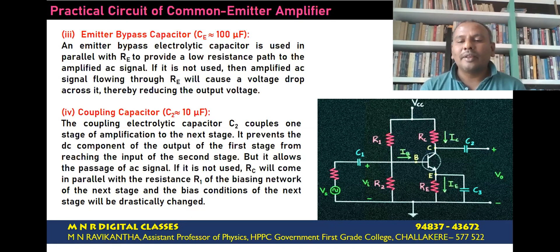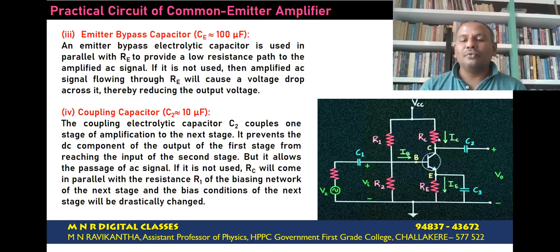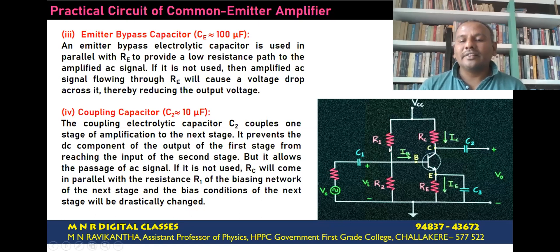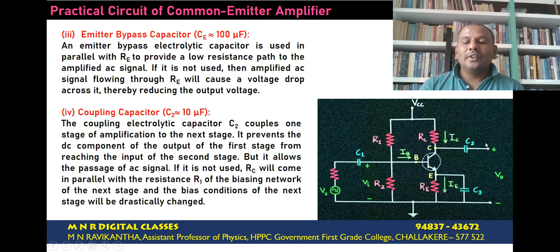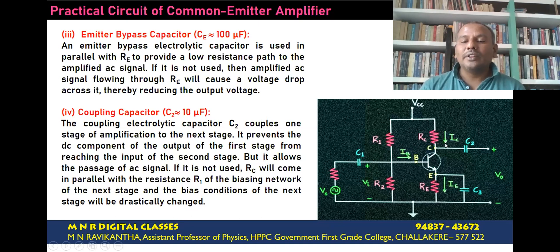If this coupling capacitor is not used, then the collector resistance RC of one stage comes in parallel with the biasing resistance R1 of the next stage, which alters the biasing resistance R1 of the transistor and leads to unfaithful amplification. So, this coupling capacitor is used to couple the output signal of one stage as input signal to the next stage without altering the biasing condition.